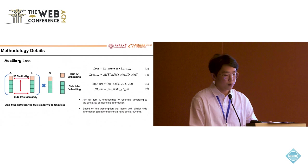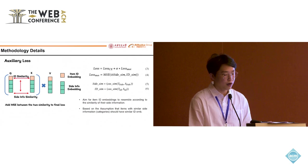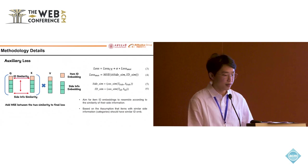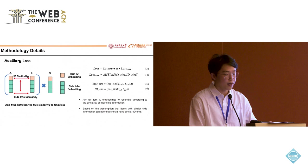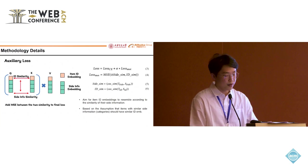As for the auxiliary loss, we aim for product item ID embeddings to resemble each other according to the similarity of their side information, based on the assumption that items with similar side information, like category or brand, should have similar ID embeddings. We apply the stop-gradient operation to the side information embeddings, allowing the item ID embedding to receive as many updates as possible. This keeps the item ID information continuously updated even after the product is sold out, so limited stock product information in user historical behavior can be utilized even when not available in distribution.